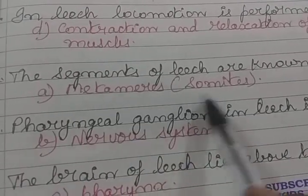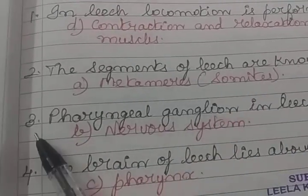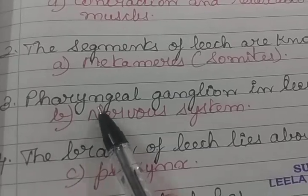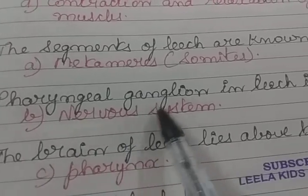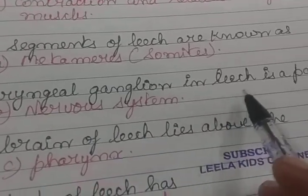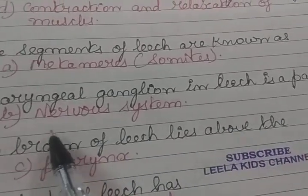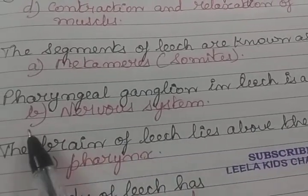The segments of leech are known as metameres or somites. Pharyngeal ganglion in leech is a part of the nervous system.